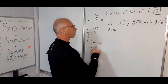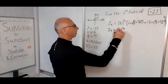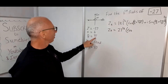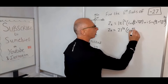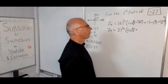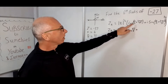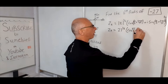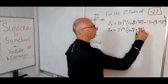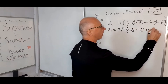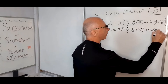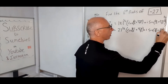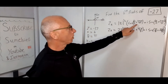Z_K equals 27 to the 1 over 6, times cosine of (pi over 6 plus 2 pi K over 6). That simplifies to pi over 6 plus pi K over 3, plus i sine of (pi over 6 plus pi K over 3). The 1 over N is already distributed with the Ns on the bottom.